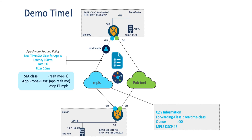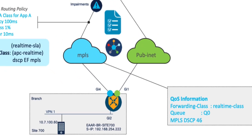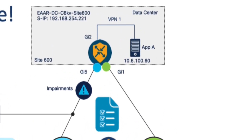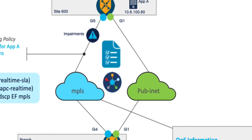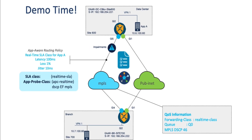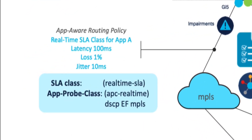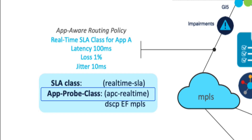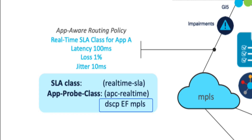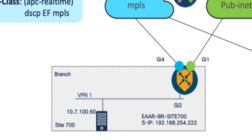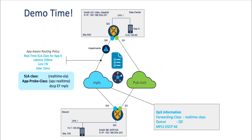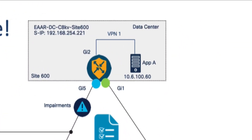I have two SD-WAN sites: branch site 700 at the bottom and data center site 600 at the top. I have two transports — MPLS T-Lock and public Internet T-Lock from site 700 branch. I have two hosts: 10.7.100.60 connected to site 700, and 10.6.100.60 connected to site 600 at the data center at the top.